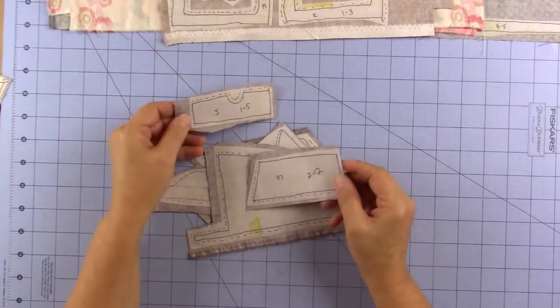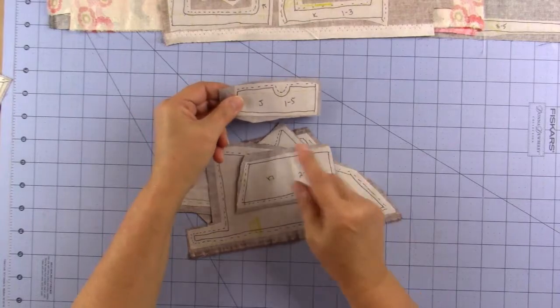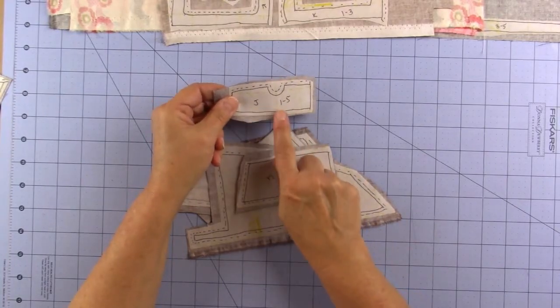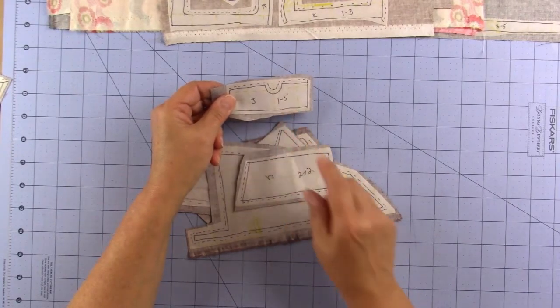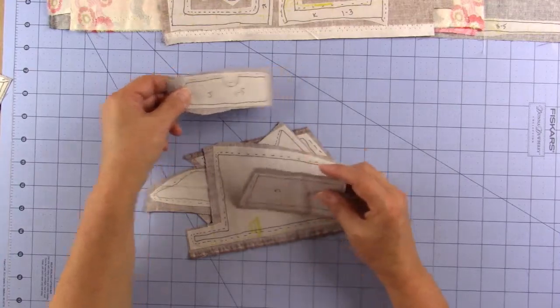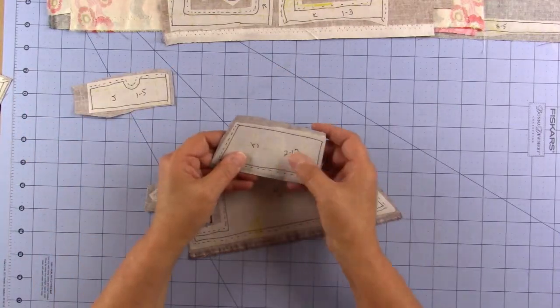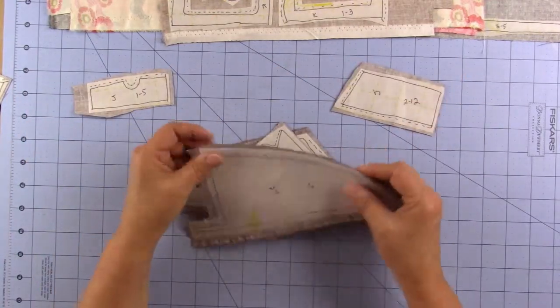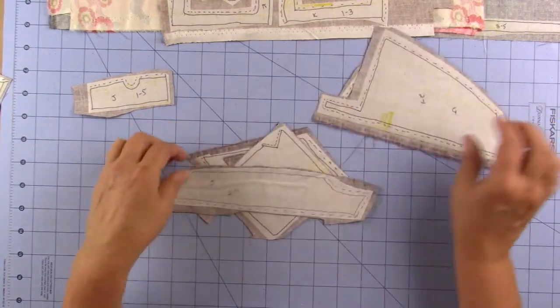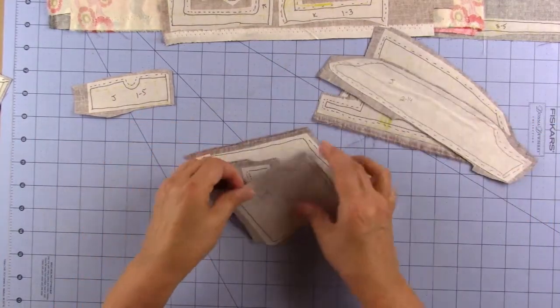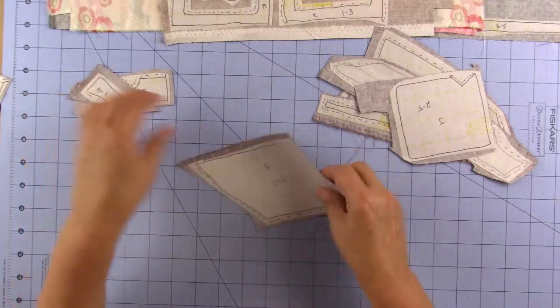Next, you're going to divide these. This is Section 1, this is Fabric J, Section 1, Number 5. So I'm going to put this in Section 1. This is Section 2, that goes in Section 2. This is Section 2, Section 2, 2, 1, and 1.